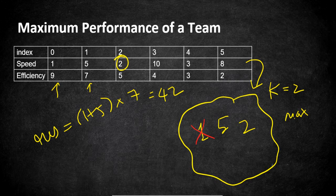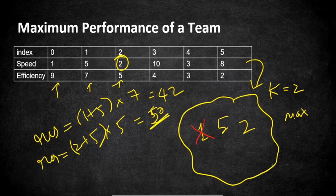Now comes the third employee with speed 2, which we push into the heap. Since the heap should hold only k engineers, we lay off the one with lesser speed — that is speed 1. Now we have speeds 2 and 5. The result is 2 plus 5 times 5, because the current employee's efficiency is the lowest of all, giving us 7 times 5 equals 35. Wait — it is 10 times 5 which is 50, which is higher than the previous performance of 42, so we maintain our result at 50. Then the next employee with speed 10 enters; 2 gets removed, leaving speeds 10 and 5, with efficiency 4, summing to 15 times 4 equals 60.